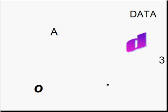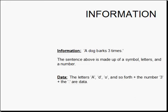Some examples of data might include letters, dots, numbers. Information might be the letters, dots, and numbers put together into a sentence such as 'a dog barks three times.' The sentence above is made up of symbols, letters, and a number. The data is the letters A, D, O, and so forth, plus the number three and the period or dot — they all are data.